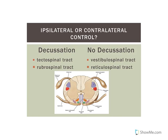Now comparing the four tracts in columns: first, whether there is decussation. The tectospinal tract and the rubrospinal tract — their axons do cross over. The vestibulospinal tract and the reticulospinal tract have no decussation. If there is crossing over, that means contralateral control — upper motor neurons originating on the left side of the brain control the right side of the body, and vice versa. If there is no decussation, it's ipsilateral control — the left side controls the left side, and the right side controls the right side.